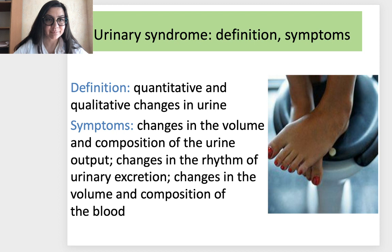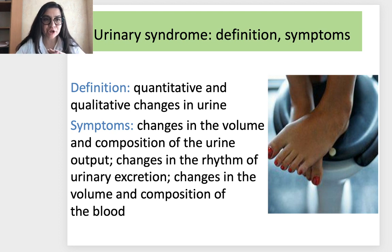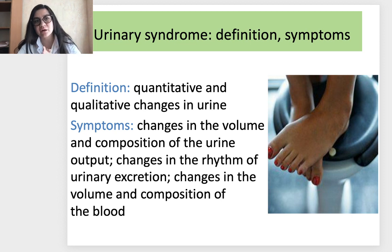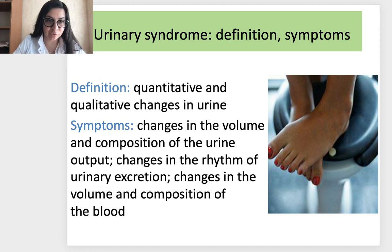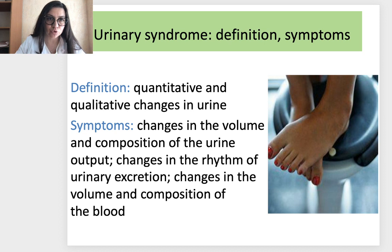Let's start from the simplest syndrome — the urinary syndrome. All you have to know is that it is quantitative and qualitative changes in urine: all changes you can find in urine, all abnormal things. It is microscopic, chemical, and physical analysis. It manifests with changes in volume and composition of urine output, changes in the rhythm of urinary expression, and changes in the composition of blood secondary to urine changes. All of these constitute urinary syndrome.